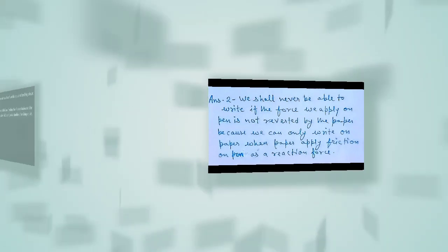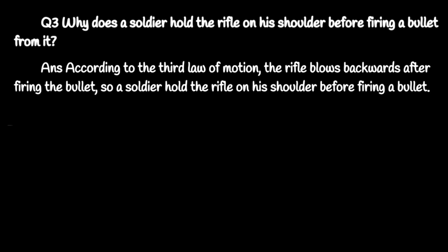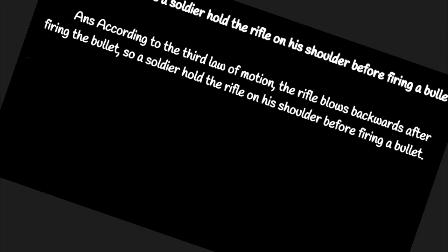Question number three: why does a soldier hold the rifle on his shoulder before firing a bullet from it? According to the third law of motion, the rifle blows backward after firing the bullet, so a soldier holds the rifle on his shoulder before firing to brace against that recoil.